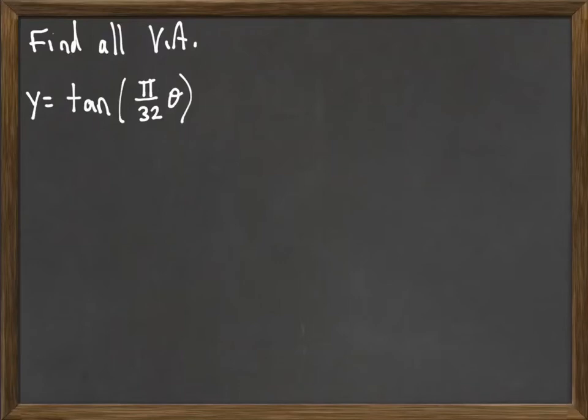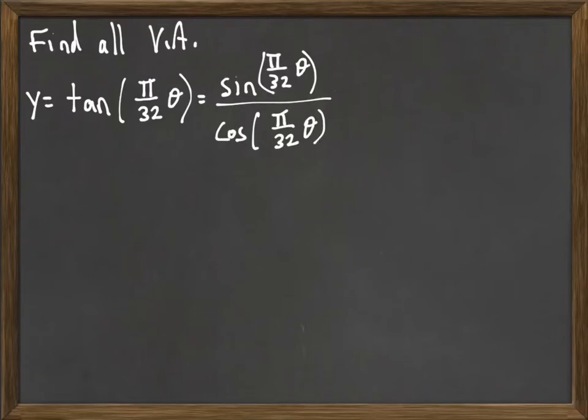Consider this function, tangent π over 32 θ. What we've discussed with rational functions has to do with vertical asymptotes occurring when the denominator is zero, but the numerator is not. So, first thing we should do is write tangent as a fraction. Tangent is sine over cosine. We need to find our vertical asymptotes when the denominator is zero.